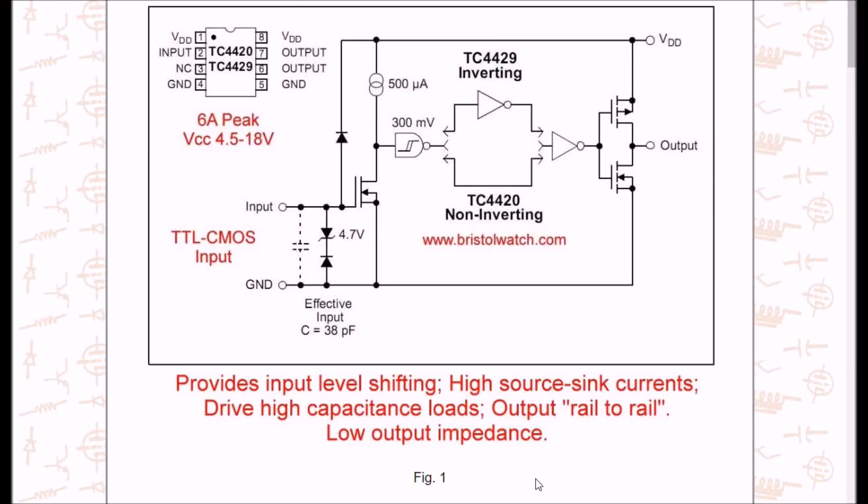Real briefly from the previous video, this is the TC4420, 4429, two different parts. It takes care of all your input level shifting, TTL, CMOS inputs, and this particular 8-pin DIP has a 6-amp peak output from this pair of MOSFETs.